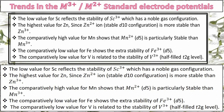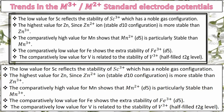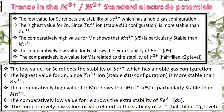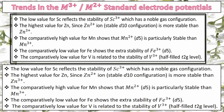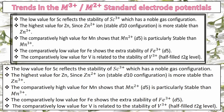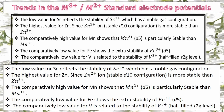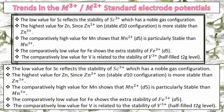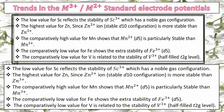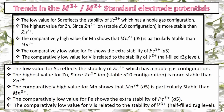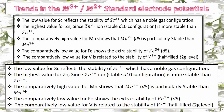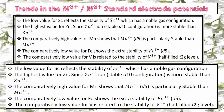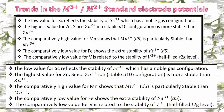Manganese also has a very high E° value for Mn³⁺/Mn²⁺ because Mn²⁺ has a half-filled d-configuration and is more stable than Mn³⁺. Iron has a very low E° value because Fe³⁺ is more stable than Fe²⁺. Vanadium also has a low E° value because V³⁺ is more stable than V²⁺, due to the half-filled T₂g configuration.